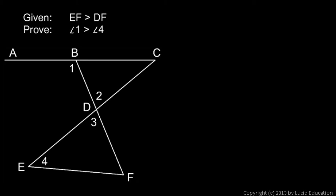In this case, let's look at our given information. We're given that EF is greater than DF, and we're told to prove that angle 1 is greater than angle 4.